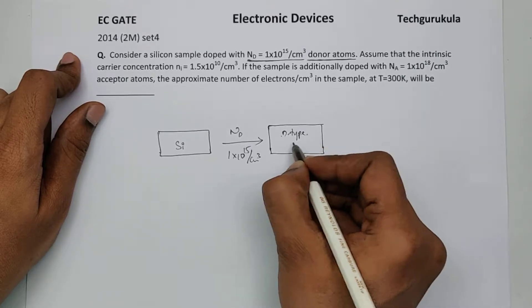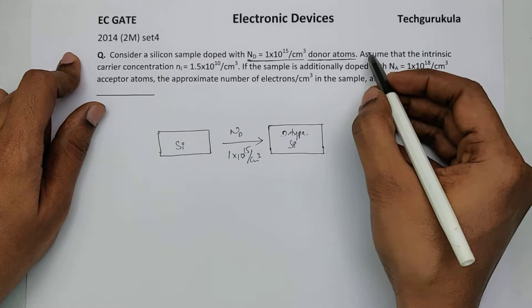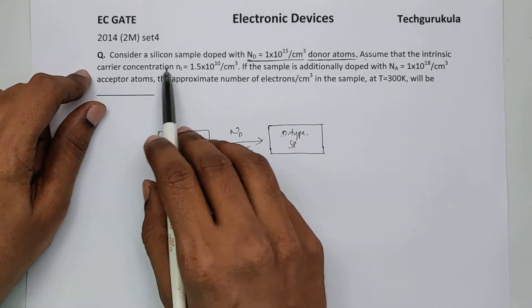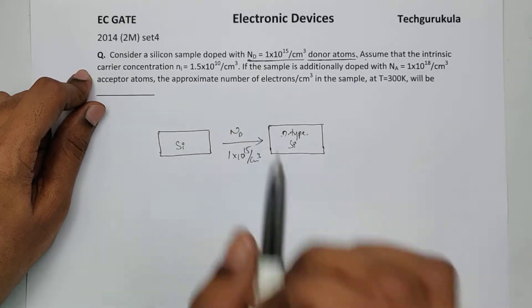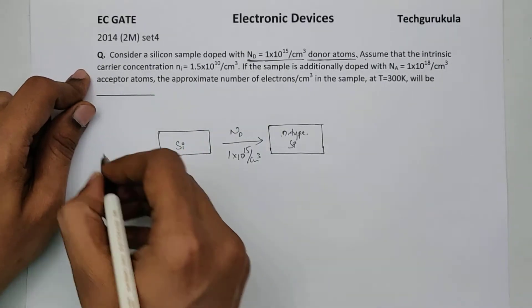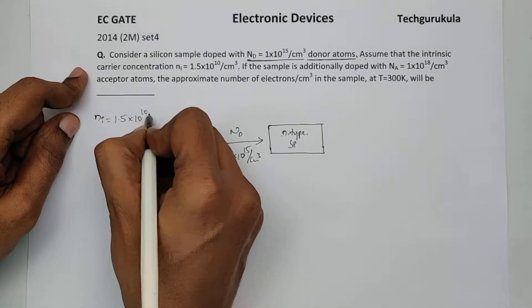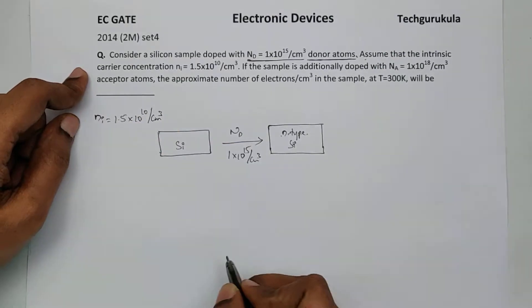So it becomes n-type silicon, that's the first statement. Now assume that the intrinsic carrier concentration ni is given here, so let me write this: ni is equal to 1.5 times 10 power 10 per centimeter cube.